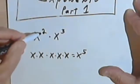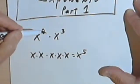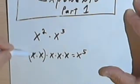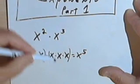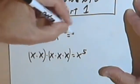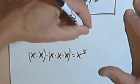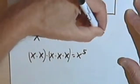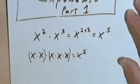A simple way of doing it without writing all those x's would just be to add the 2 — the exponent for the first x — and the 3 — the exponent for the second x — and we would get x to the 2 plus 3. And then of course 2 plus 3 is 5, so we have x to the fifth.